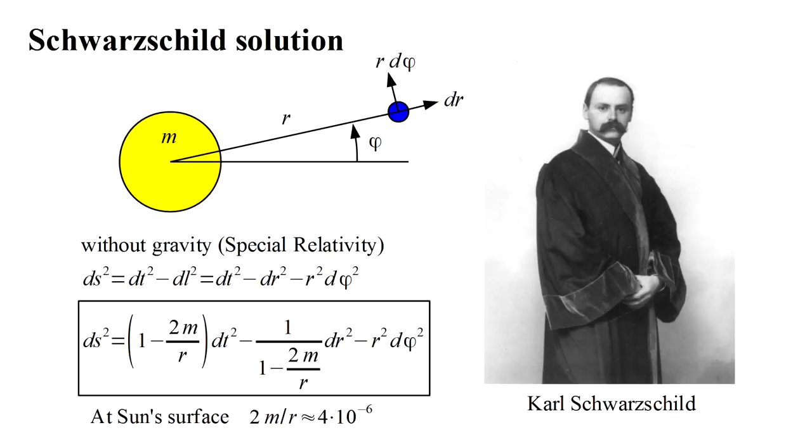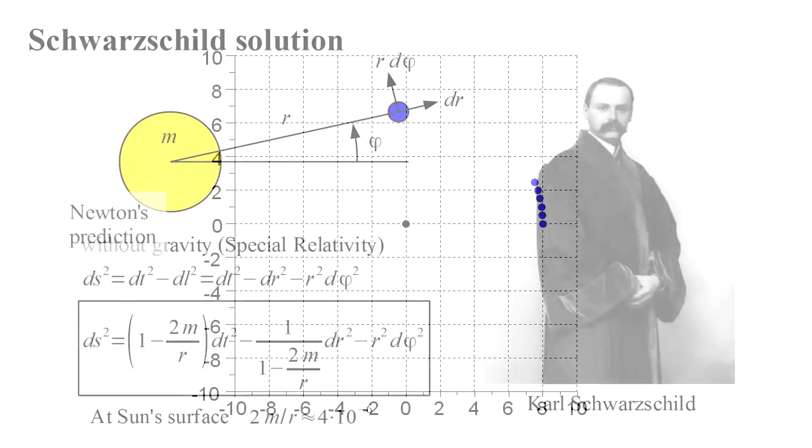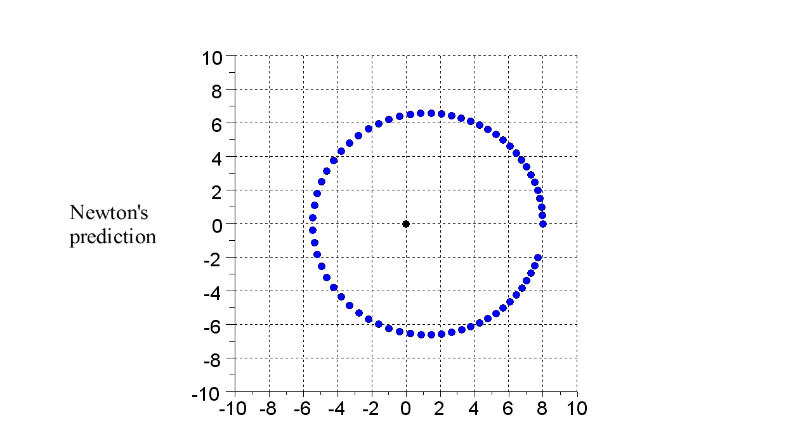Let's now jump right into the predictions for planetary orbits and light beams. We'll start with numerically calculated orbits for both the Newton and Einstein theories. Newton's theory predicts that a particle orbiting a massive body will follow an elliptical orbit that closes on itself and repeats perpetually. Here we show the case of a slightly elliptical orbit.